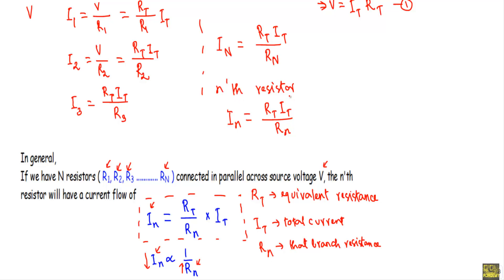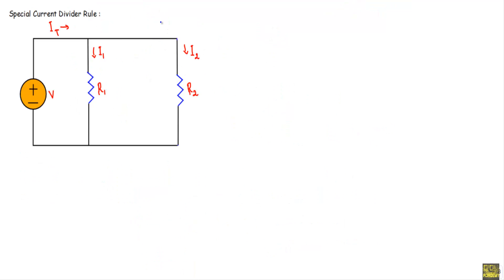In a circuit, the total current It and the equivalent resistance Rt are constant. Therefore from the formula In = Rt × It / Rn, we can write that In is proportional to 1/Rn, which indicates the current in any branch is inversely proportional to its resistance. This is our current divider rule formula, its statement, and its derivation for the nth resistor in a circuit.